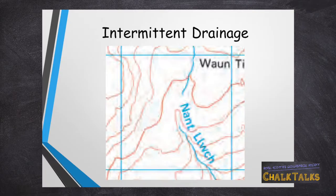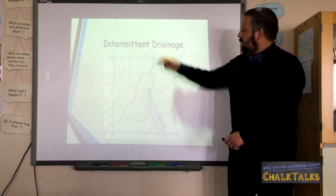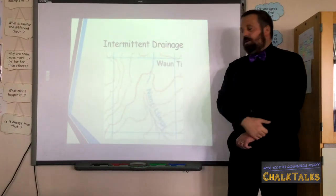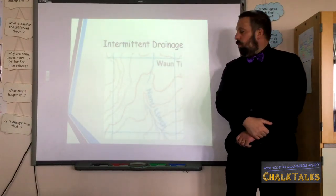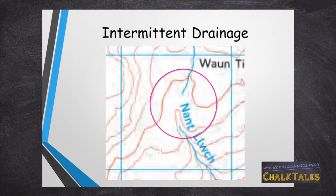Intermittent drainage can be identified by looking along the length of the river and spotting that for part of its length it appears as though it stops and starts again. You might be forgiven for thinking that this is actually two separate rivers, one flowing northwards and the other flowing southwards. But this is actually one river that, for parts of its section, disappears underground and then reappears on the surface some distance later.